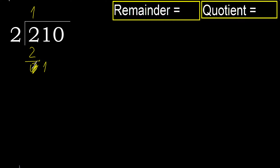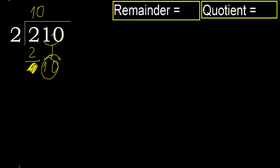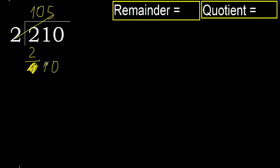Bring down. 1 is less, therefore next. 10 is not less. Always complete with 0 — complete with 0 because here there are 2 numbers. 10: 2 multiplied by 5 is 10. 10 is not greater. Subtract: 0. No next number, therefore finish.